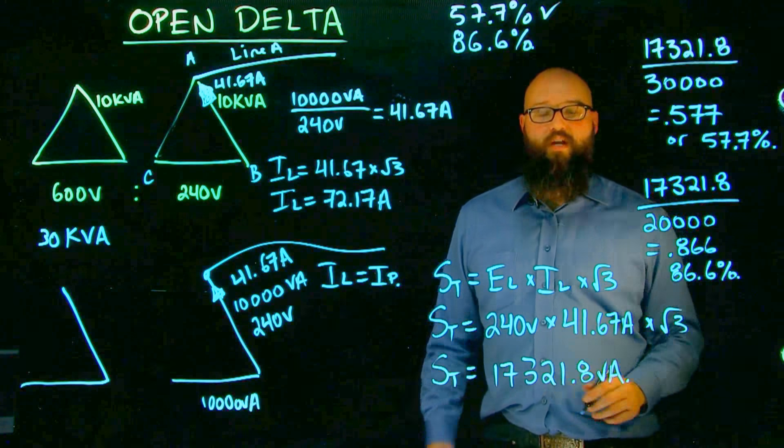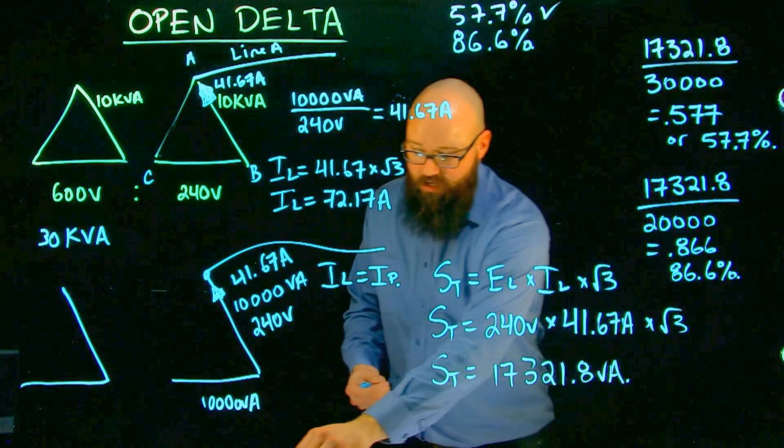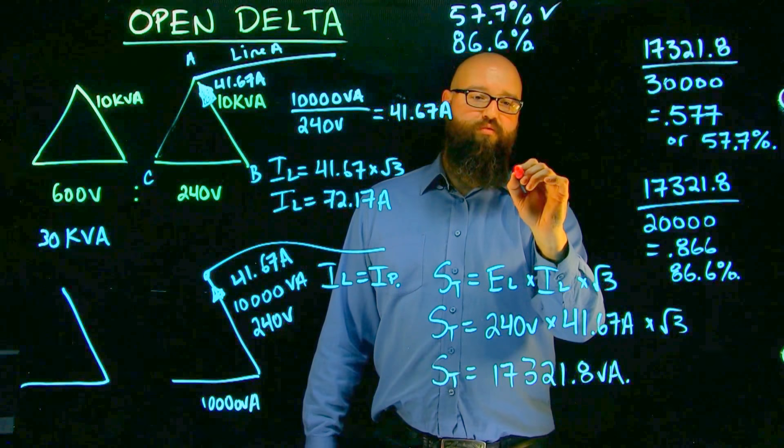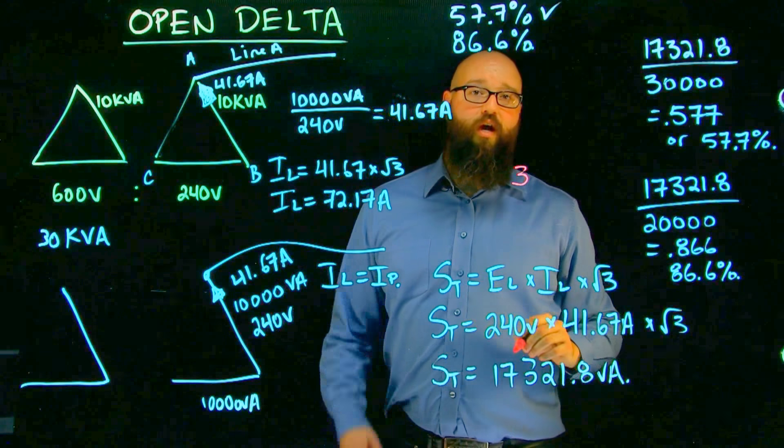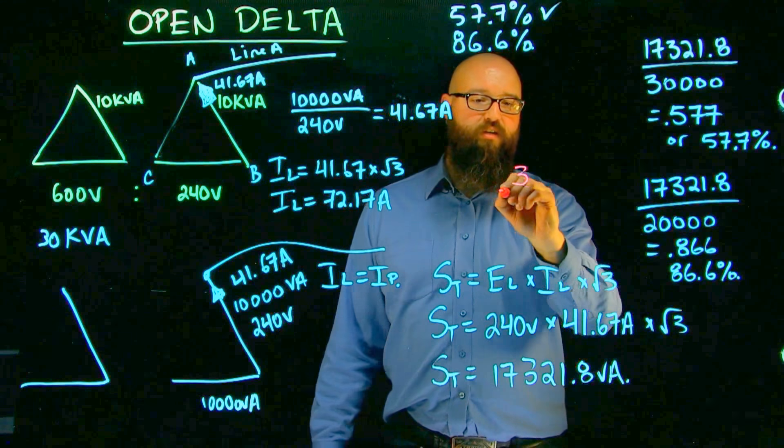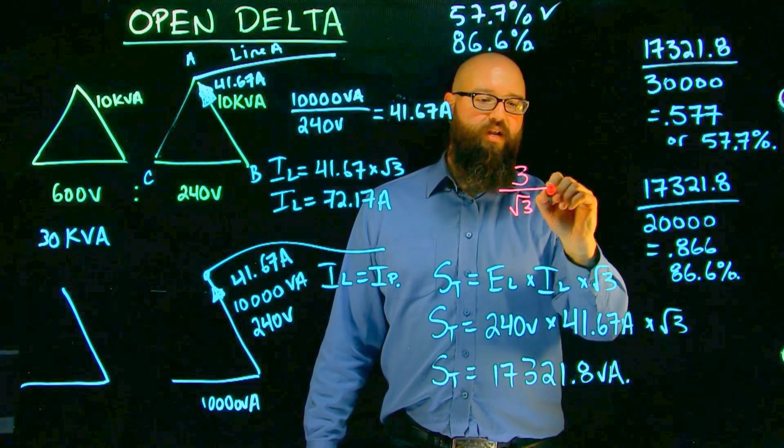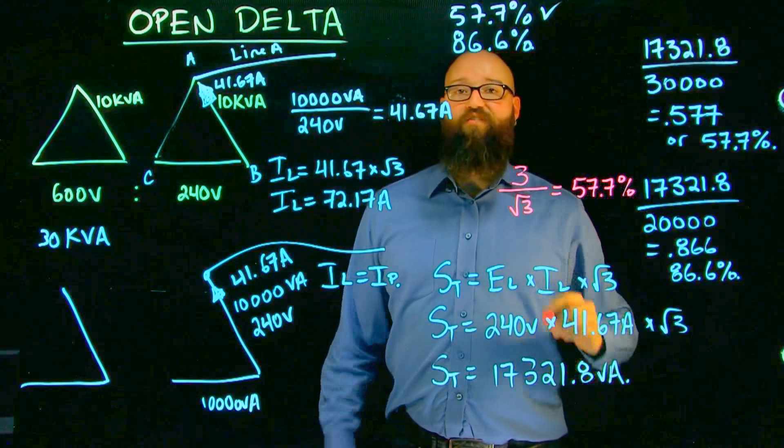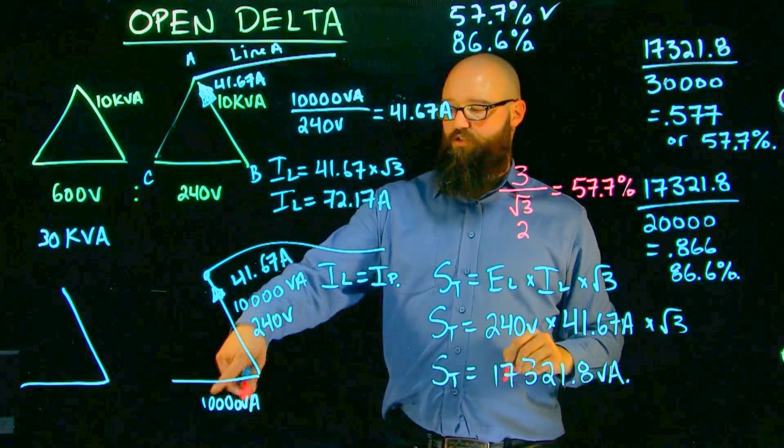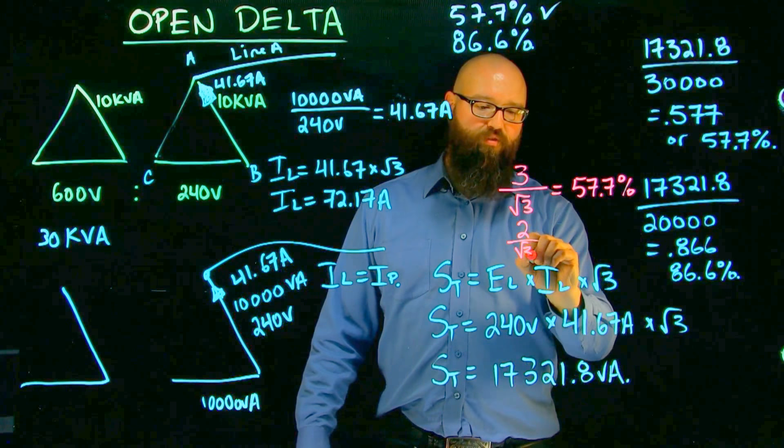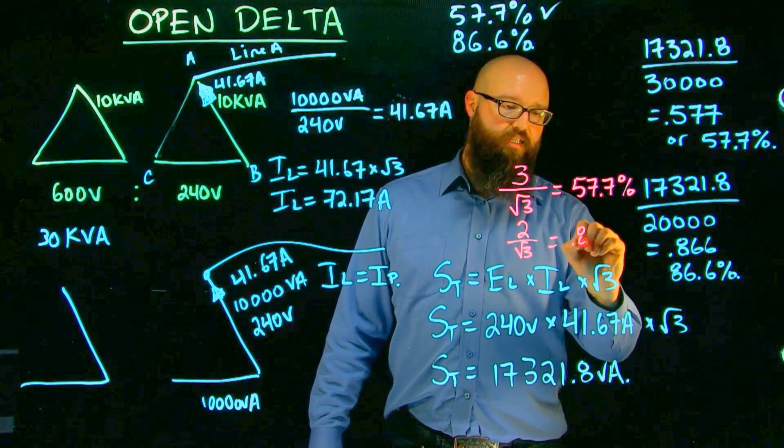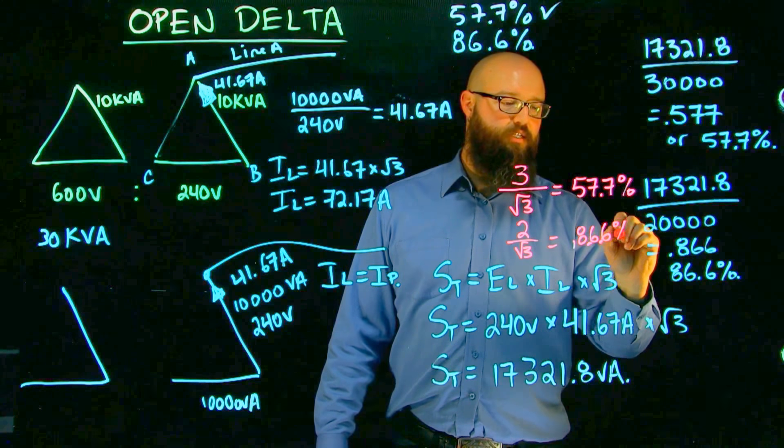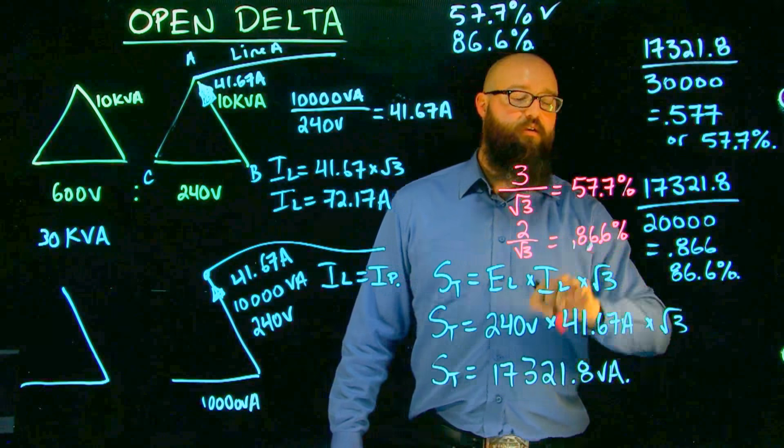Okay, another quick way to quickly calculate those out. If I have, we'll say three transformers, and I want to know what they're going to be in open delta, I can divide it by root three gives us 57.7%. And if I start with two transformer, or these two coils, and I divide it by root three, I end up with 0.866 or 86.6%. Sorry, get rid of that.